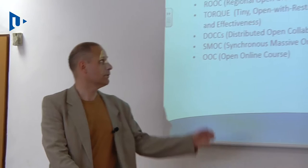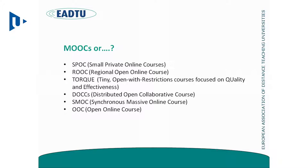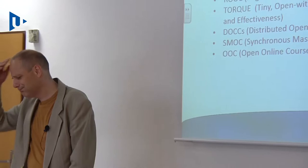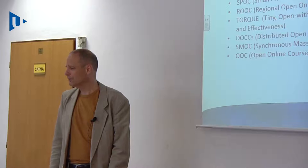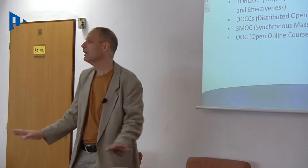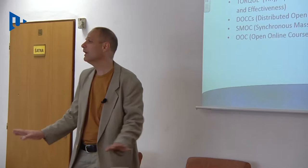We had a discussion about distance education and online education. One recommendation in the Changing the Pentecostal Landscape study was that we need a framework with some definitions. To make it more complicated, there are more than 20 kinds of abbreviations. For example, there are Regional Open Online Courses open only to regions, TORQUE — Tiny Open with Restrictions — and SPOCs, Small Private Online Courses. The difference between an online course and a SPOC gets very confused.